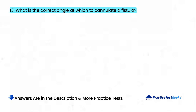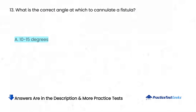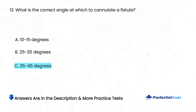What is the correct angle at which to cannulate a fistula? A. 10 to 15 degrees. B. 25 to 35 degrees. C. 35 to 45 degrees. D. It doesn't matter.